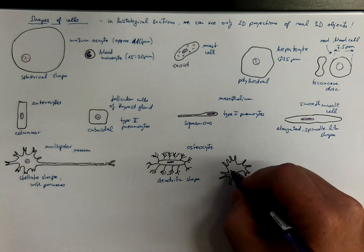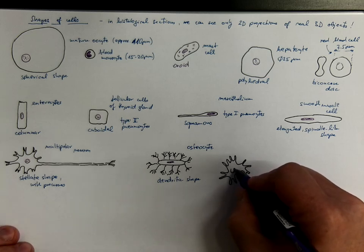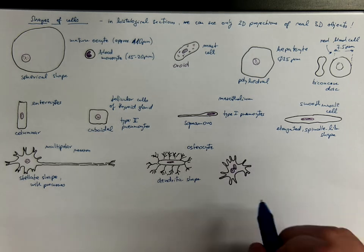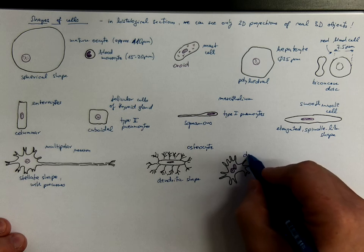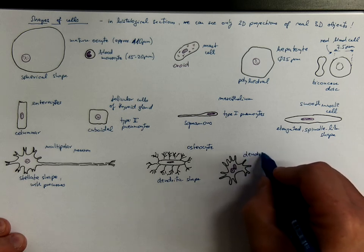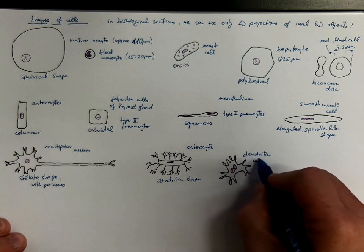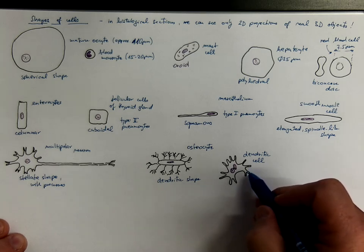There's a nucleus, usually with an incision. So this is a dendritic immune cell that could be found in lymphoid follicles.